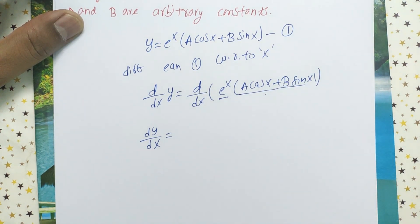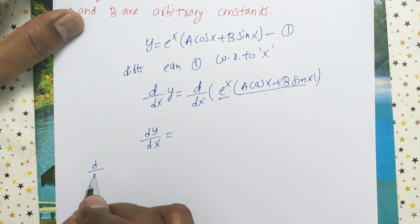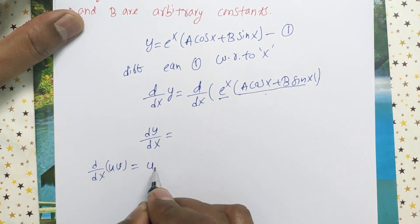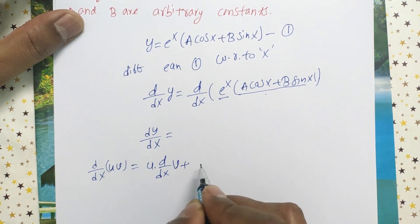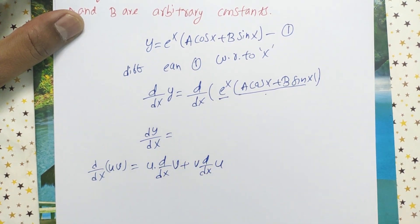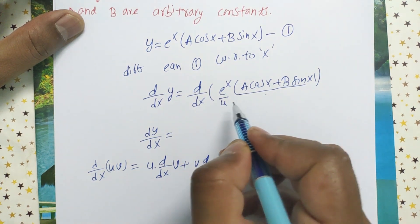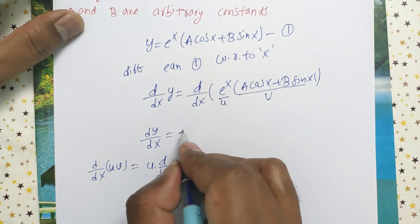For the second term, we use the product rule formula: d/dx(uv) = u · d/dx(v) + v · d/dx(u). Here eˣ is taken as u and (a cos x + b sin x) is taken as v.